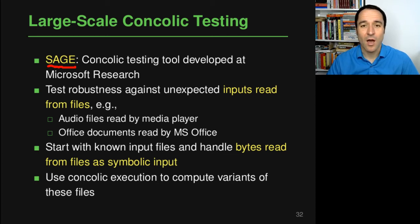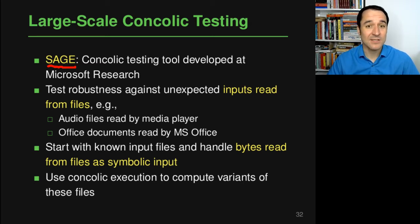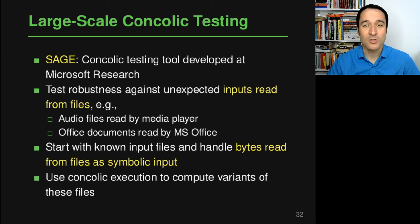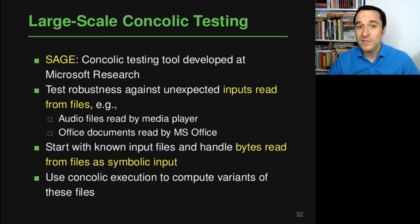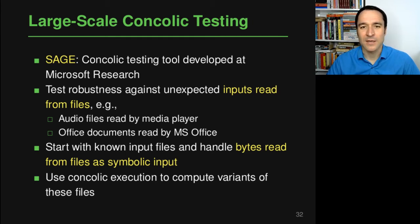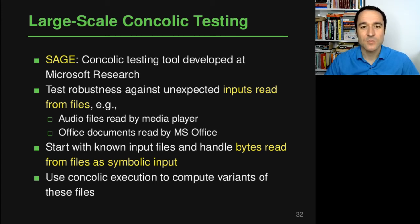For example, think of a media player or an office-like application that is opening files — maybe files it does not trust — and where you want to check whether anything unexpected in these files could lead the program to a crash or trigger some behavior that attackers could exploit by sending a malicious file to someone who then opens, say, a Word file and lets the attacker exploit a vulnerability in the underlying code. To test for these behaviors, SAGE starts with a few known input files.